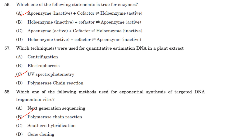Which method is used for exponential synthesis of targeted DNA fragments in vitro? That is polymerase chain reaction (PCR). Answer is option B.